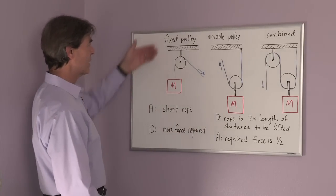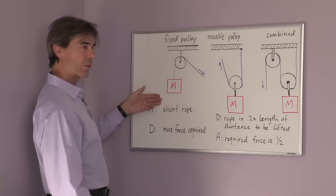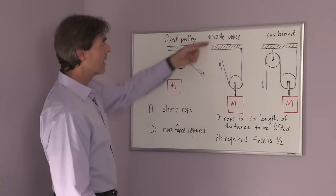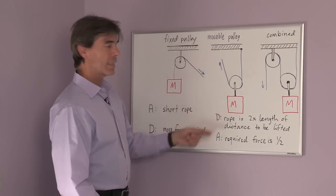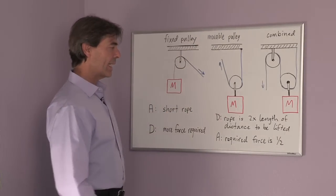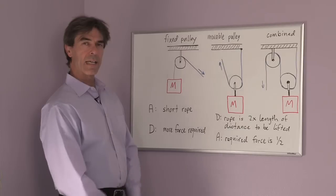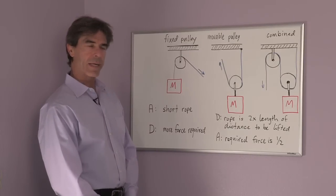So the advantage of the fixed pulley is short rope. Disadvantage, more force required. In the movable pulley, the disadvantage is a longer rope and the advantage is a decreased force required to lift it.